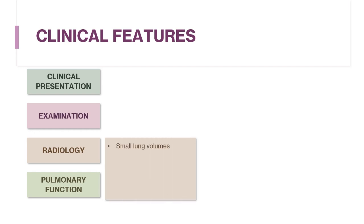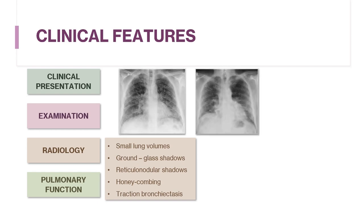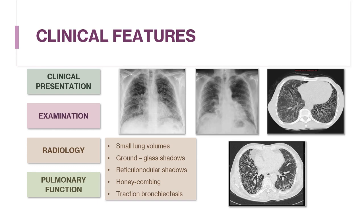Coming on to the radiological features of DPLD. In the earliest stages, the typical radiographic findings include ground glass and reticulonodular shadowing, progressing to honeycomb cysts and traction bronchiectasis. While these appearances may be seen on a plain chest X-ray, they are most easily appreciated on HRCT, which has assumed a central role in the evaluation of DPLDs. On chest X-ray, there are typically small lung volumes with reticulonodular shadowing.